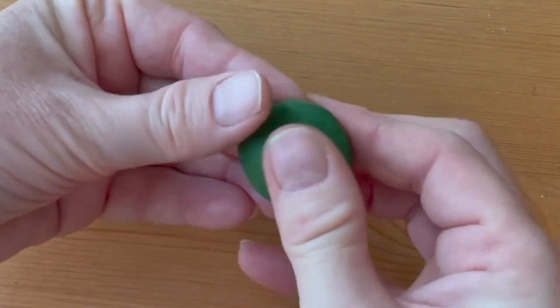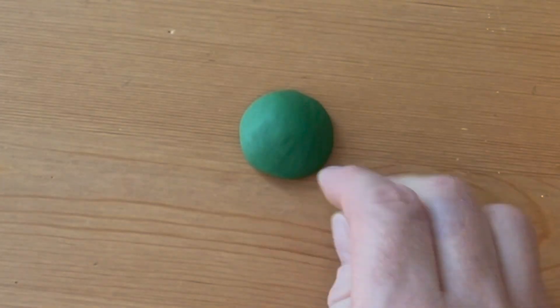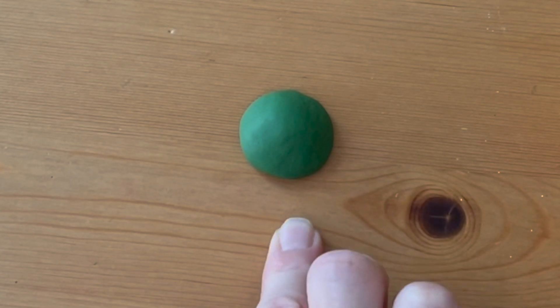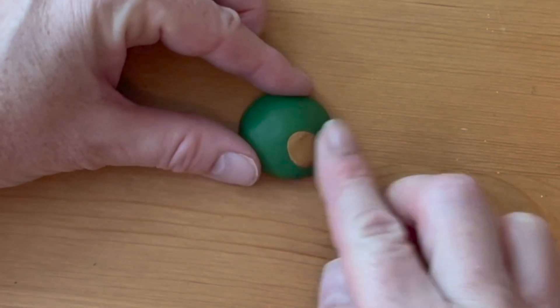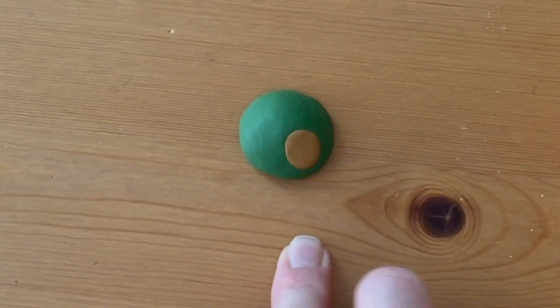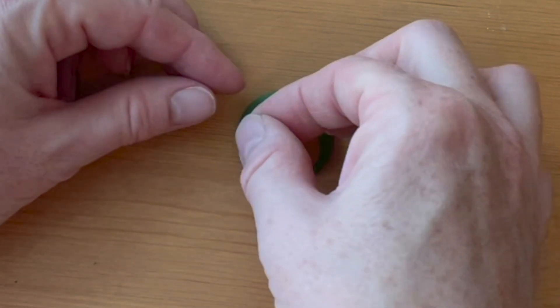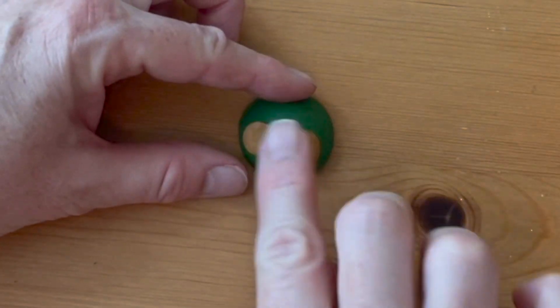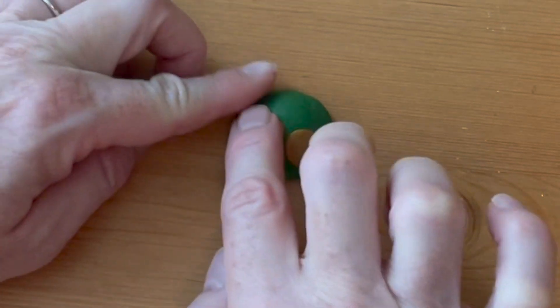Form the darker clay into a dome that's about one inch across. Roll four gold balls and press them flat with your finger. Press them onto the dome to make spots on the turtle shell. Place them in each quarter of the shell and don't worry if they're exactly round or the same size. It looks a little better if they're slightly irregular.